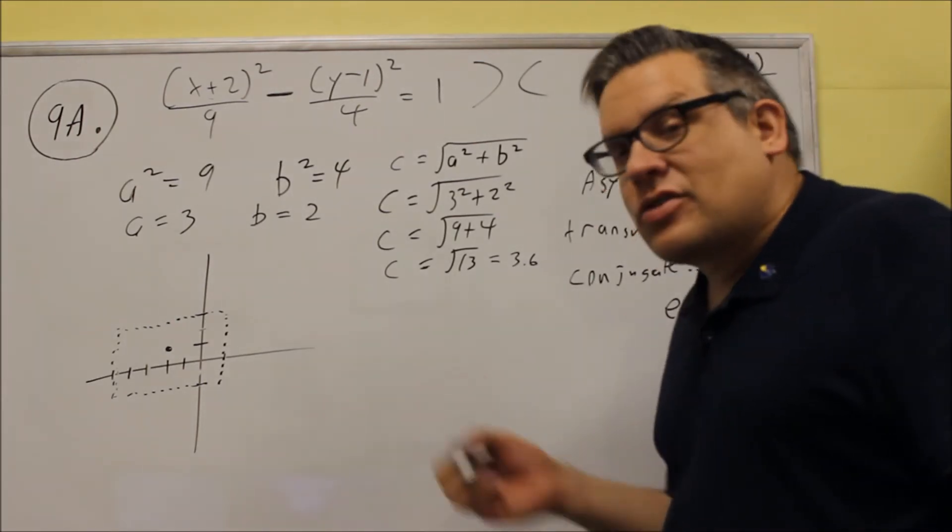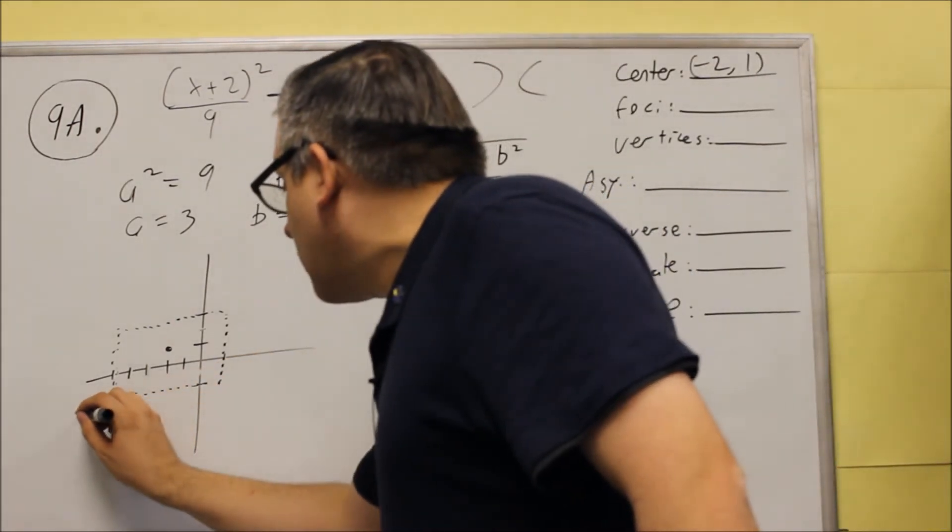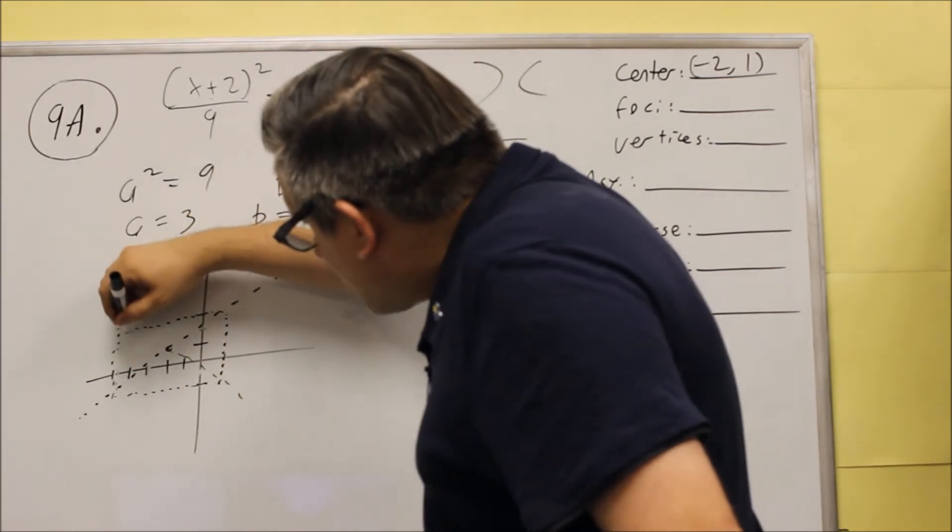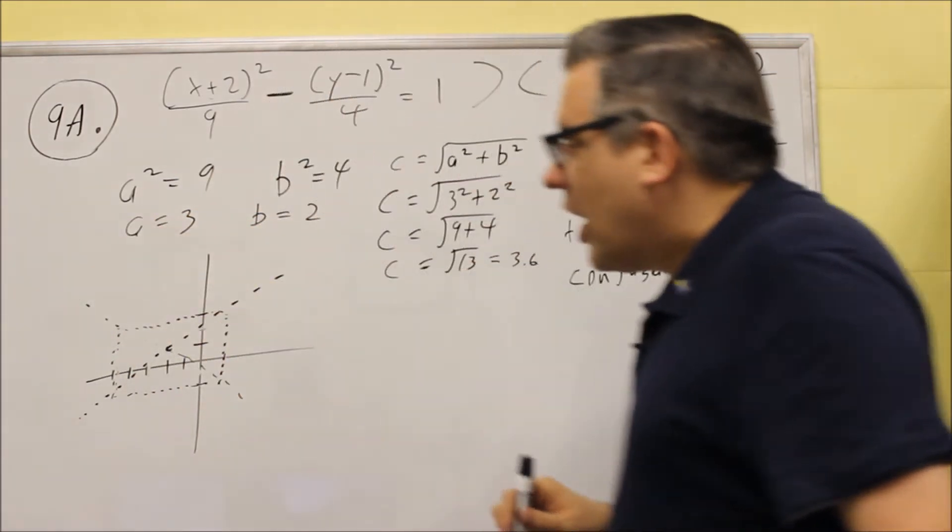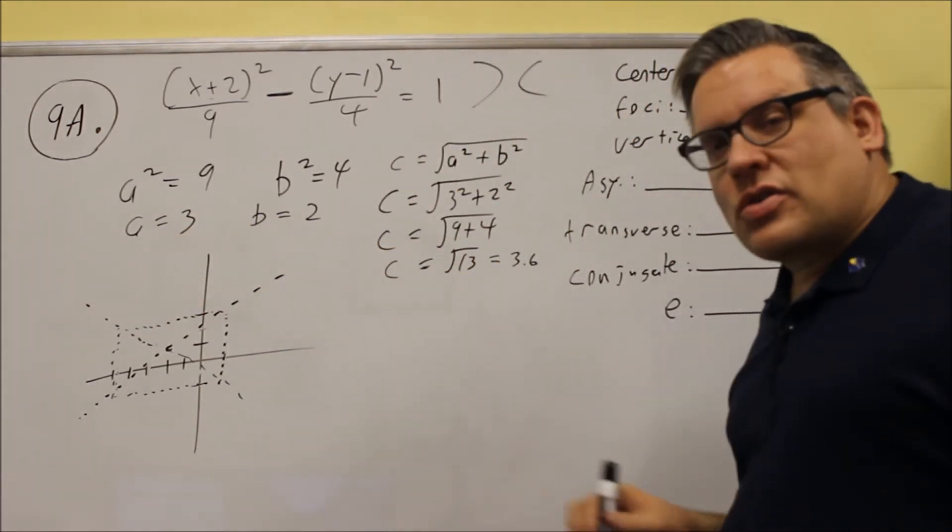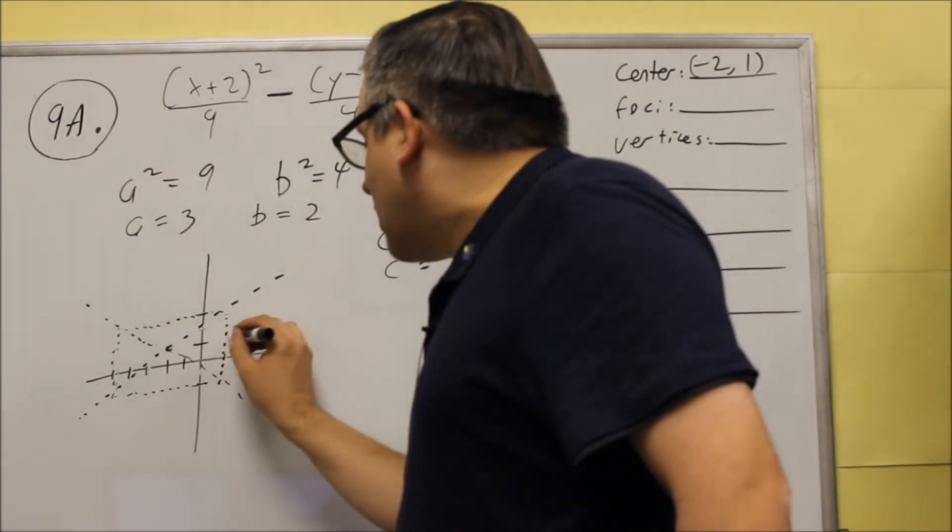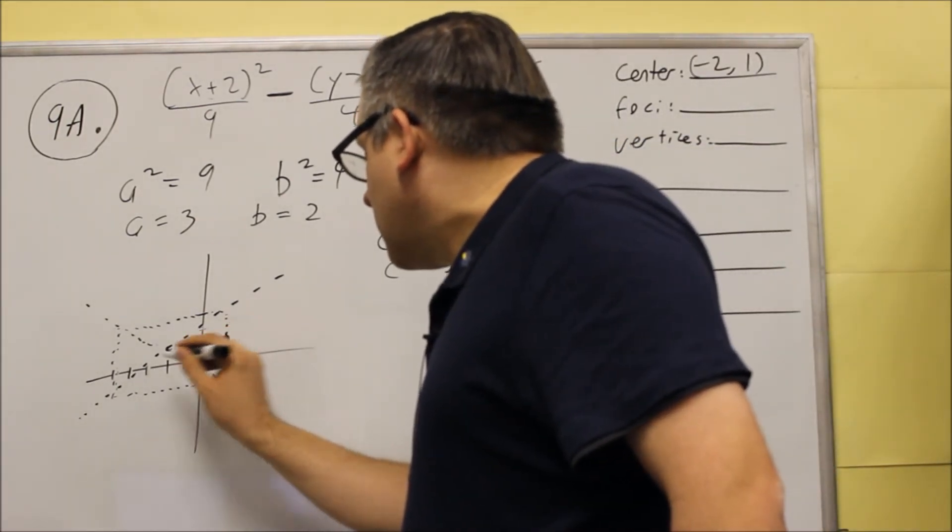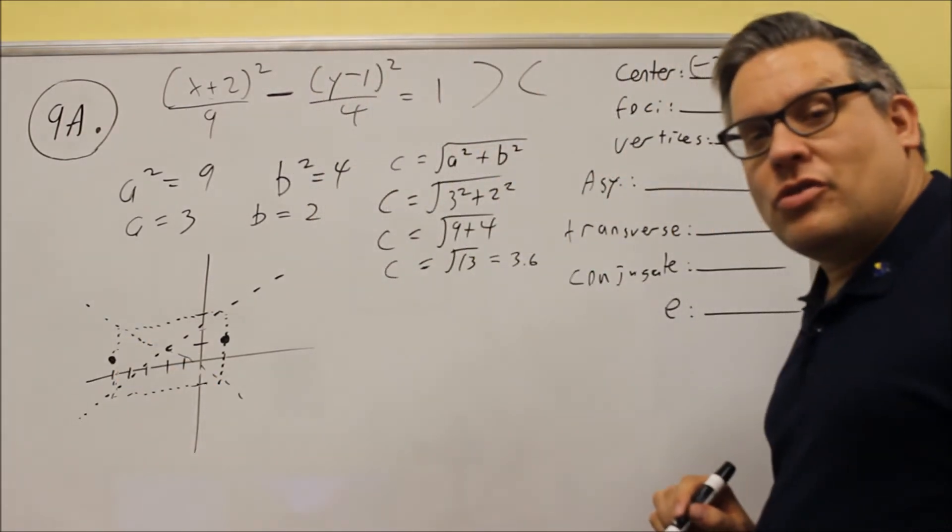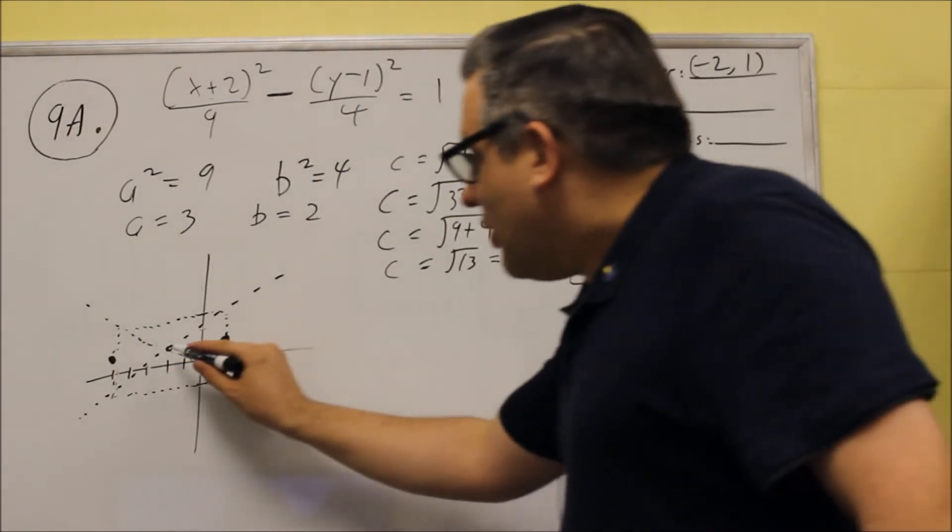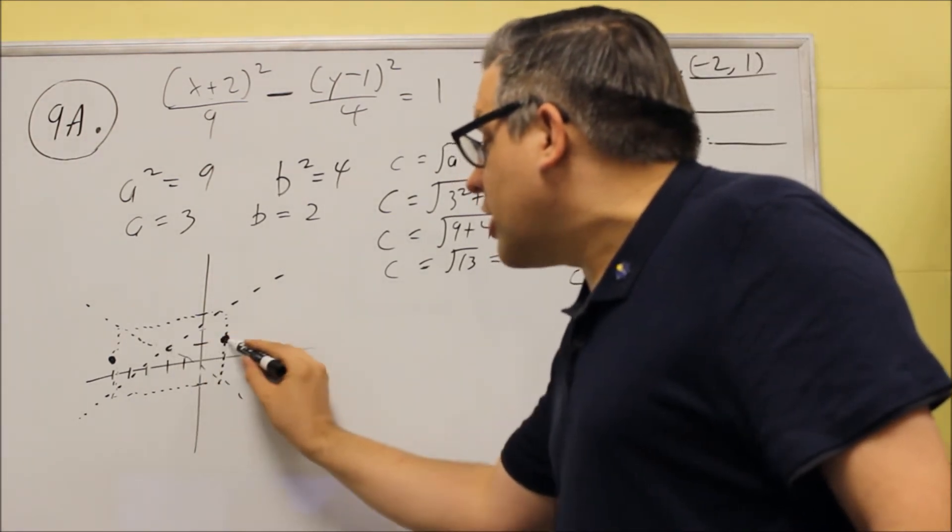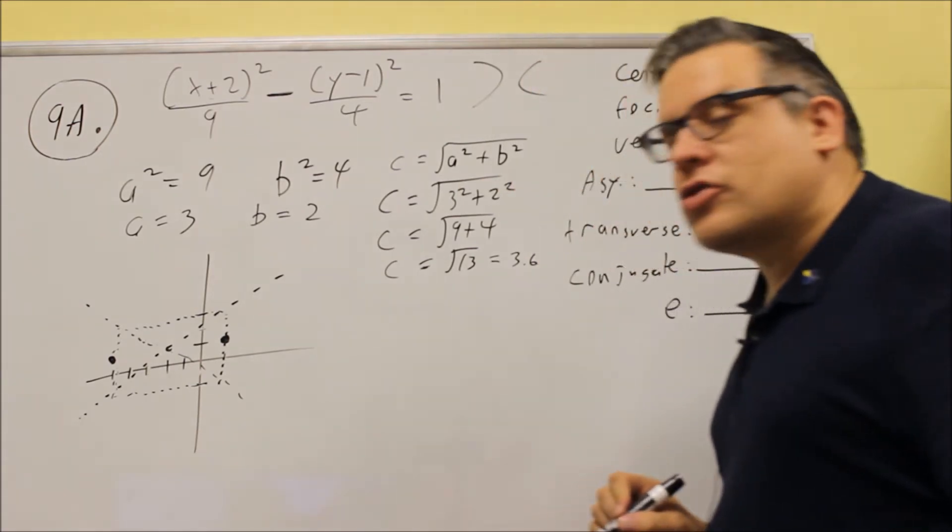So a goes left and right. B goes up and down. That gives me my dimensions of the box. So why do we do the box? It's because you want to connect the diagonals together. And the diagonals are what's going to form your asymptote lines, which is part of the graph. So I have all that as setup work.